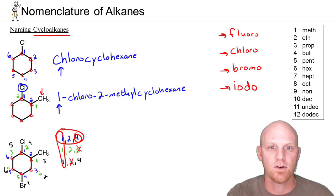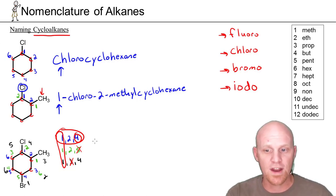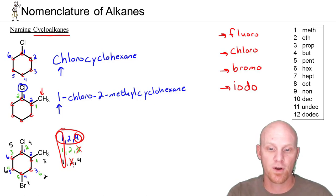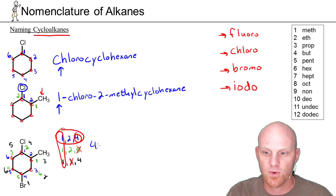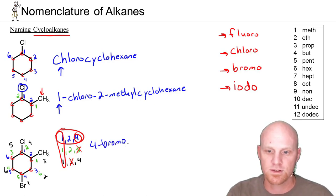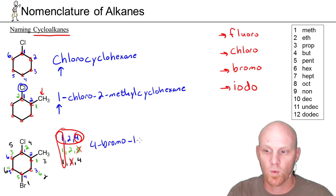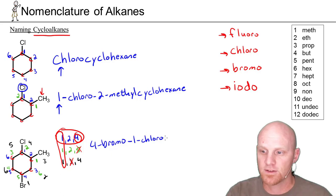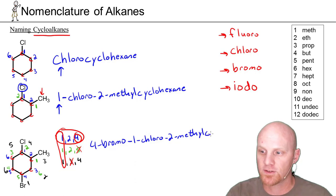Using the blue numbers, we name the substituents in alphabetical order. Bromo comes first alphabetically and is at position 4, so that's 4-bromo. Chloro comes next and is at position 1: 1-chloro. Finally, methyl is at position 2: 2-methyl. The full name is 4-bromo-1-chloro-2-methylcyclohexane.